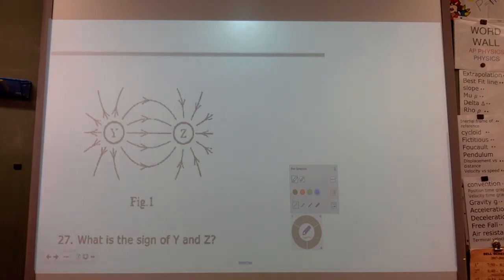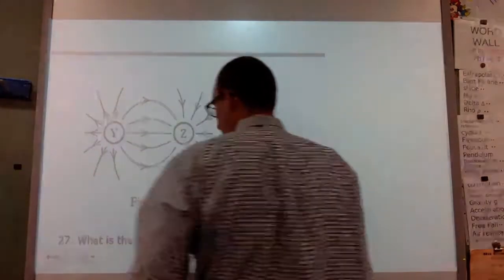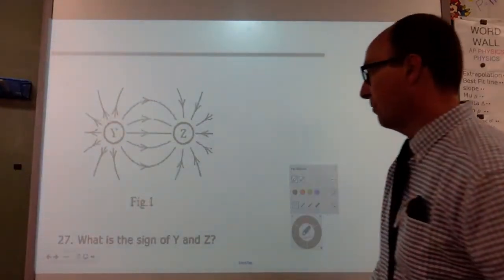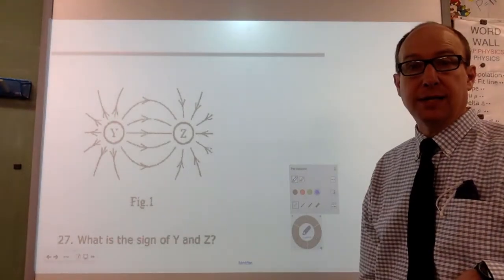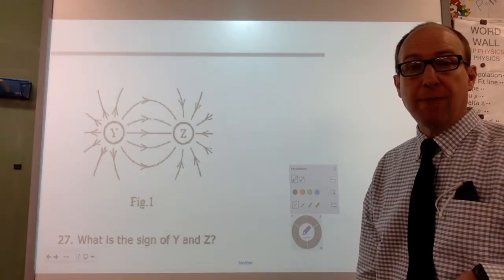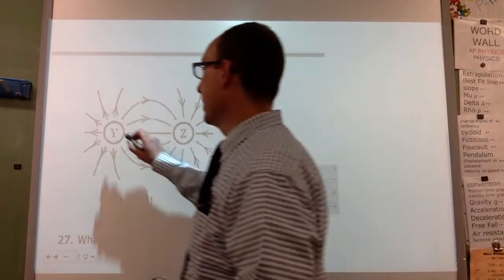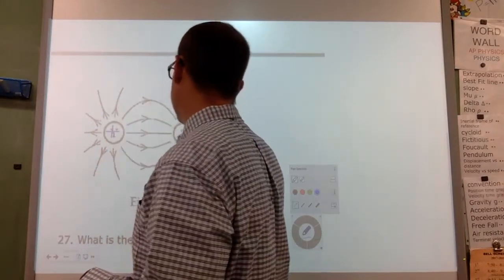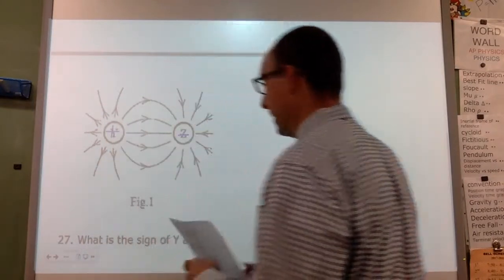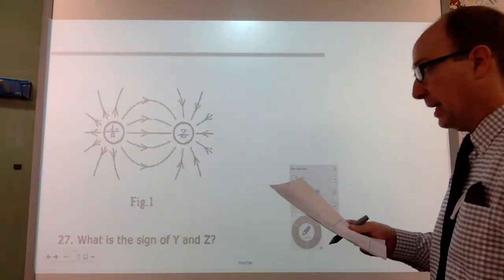All right, this one we can easily see. It says: what is the sign of Y and Z? Since the field lines are going away from Y and towards Z, that would make Y positive and Z negative.